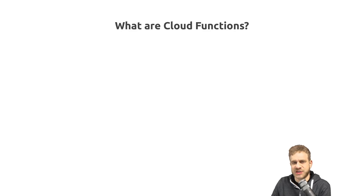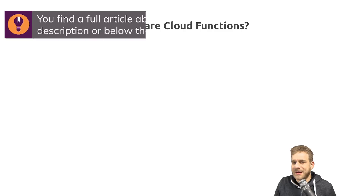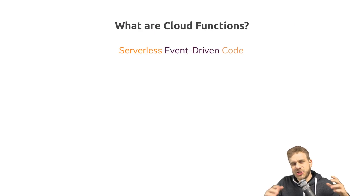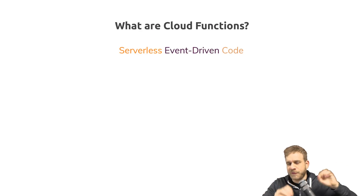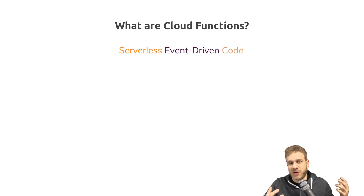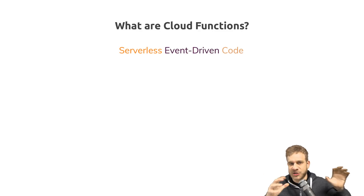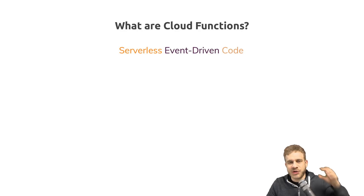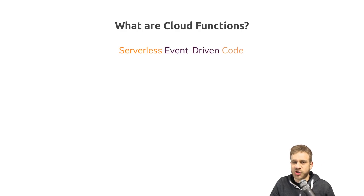So what are Cloud Functions — Firebase Cloud Functions? Firebase Cloud Functions are all about serverless event-driven code. That's a nice phrase, but what does it actually mean? It means that you can put some code in your Firebase project. Firebase is a service where you can host or build your own backend without writing too much server-side code. Cloud Functions are a part of Firebase where you can write your own server-side code and specify when this code should get executed.